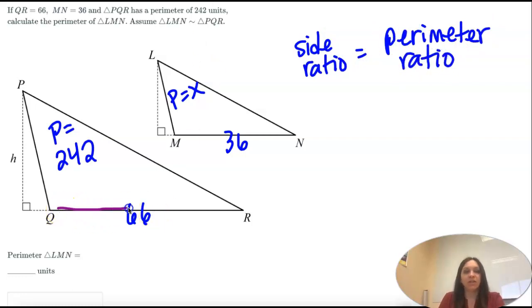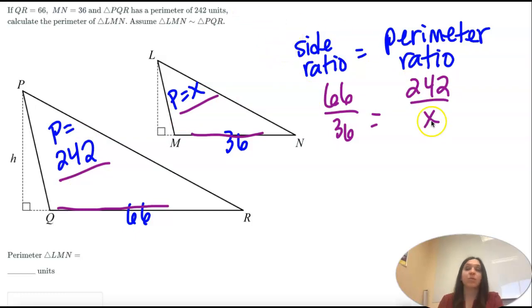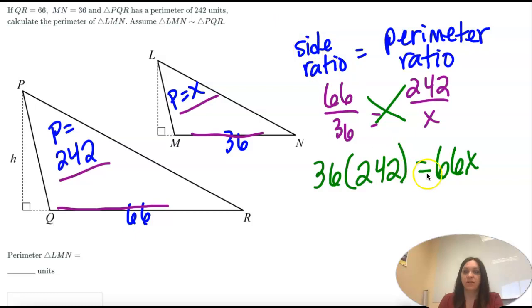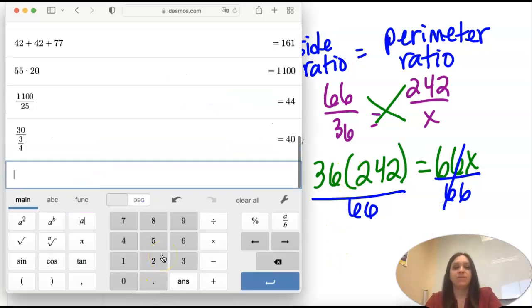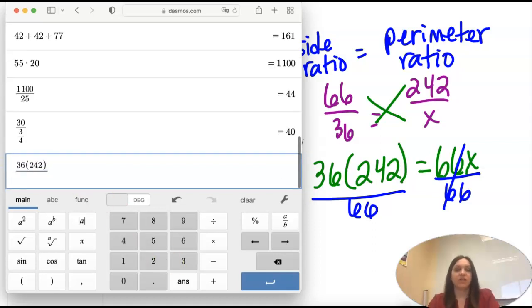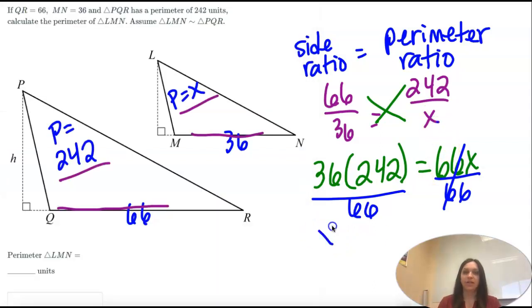So if I have a side ratio of 66 to 36. That's the same number as the perimeter ratio. 242 to x. And I can solve it just like we've been solving our other ones. By cross multiplying. So 36 times 242 equals 66x. So I'm going to take 36 times 242 and then divide it by 66 to get our answer. So 36 times 242 and divide that answer by 66. So x is 132. And x was our perimeter.